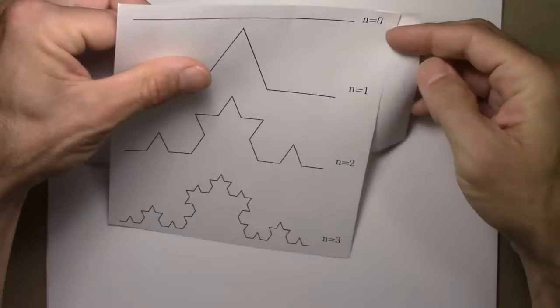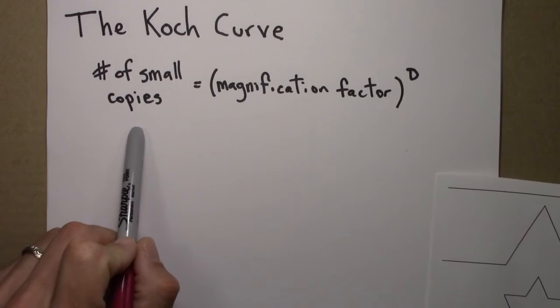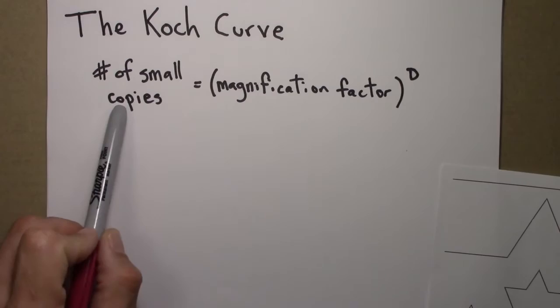Okay, so our task is to come up with the self-similarity dimension for this. We'll use the regular formula. The number of small copies equals the magnification factor to the D dimension.